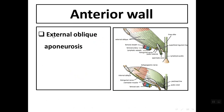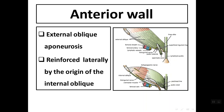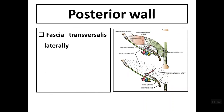The anterior wall is formed by the external oblique aponeurosis. If we remove the external oblique, the anterior wall is reinforced laterally by the origin of the internal oblique. So the anterior wall is formed by the external oblique aponeurosis and reinforced laterally by the origin of the internal oblique.